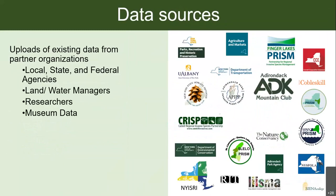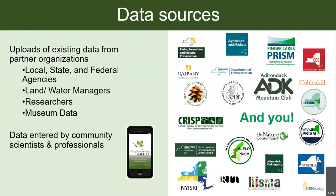The IMAP Invasive database has a lot of data in it. A lot comes from uploads of existing data from partner organizations, which offer great snapshots of species distributions at that time. But distributions are always changing, so we need continuing data upload and we really rely on people like you — data entered by community scientists and professionals. This is really important because here at IMAP we are the database people; we don't go out and do the surveying. To maintain the quality of the database, all species IDs are confirmed by experts.